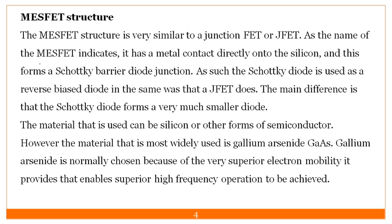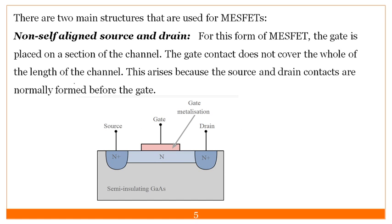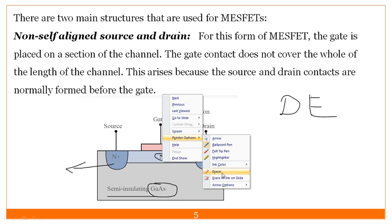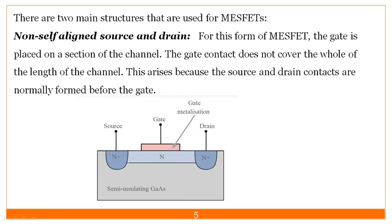The structure of MESFET has a semi-insulating gallium arsenide base layer. On top of that, a highly doped N-type region is grown, and the channel in between is an N-channel. There are two types of MESFET — depletion and enhancement. In the structure where the channel is present, it is the depletion type, specifically an N-channel depletion MESFET.